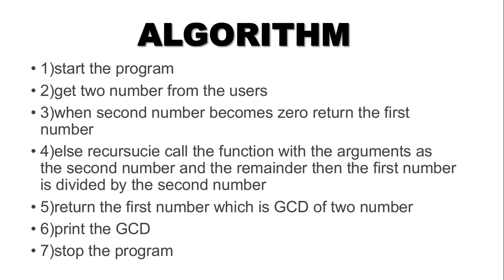First, let's start the program. There are steps — first step and last step. Check the second step: get the two numbers from the user. Then check the function — that is the first step, that is the second number.